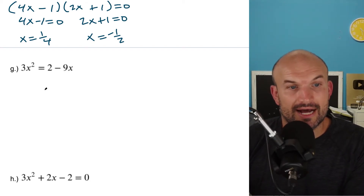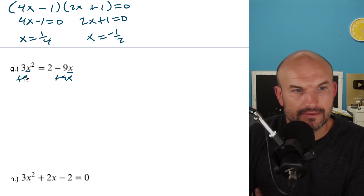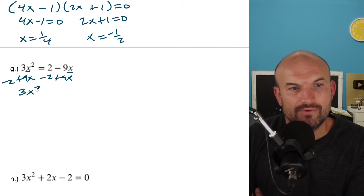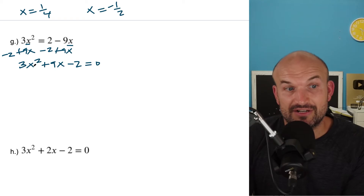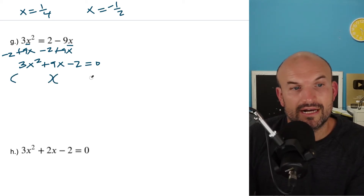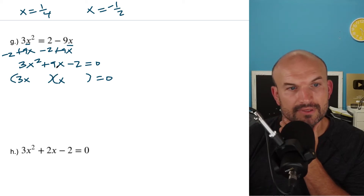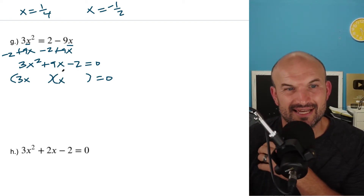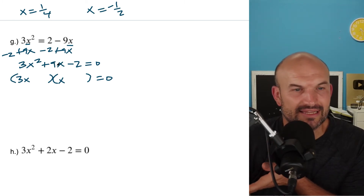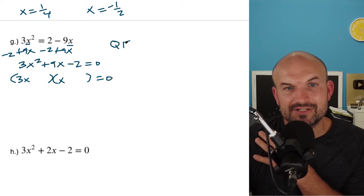Now let's work on these two examples. Same idea — don't use inverse operations. Notice how we have two x's. Let's get everything over to the same side. Add nine x and subtract two. I'm left with three x squared plus nine x minus two equals zero. Now I'm looking to factor this out. Is this factorable? I can multiply three x times x. In this case, I need to get a negative two. If I do negative two times three, that's six — I would need to add that to a three to give me nine, and I don't see that this is going to be factorable. So I'm going to need to apply the quadratic formula.